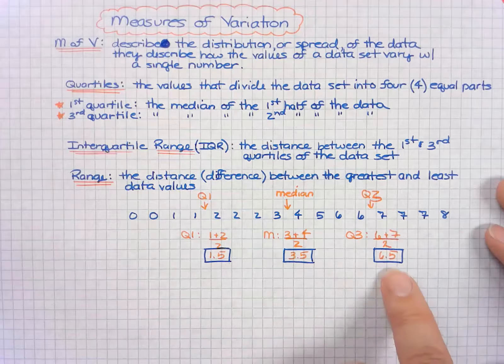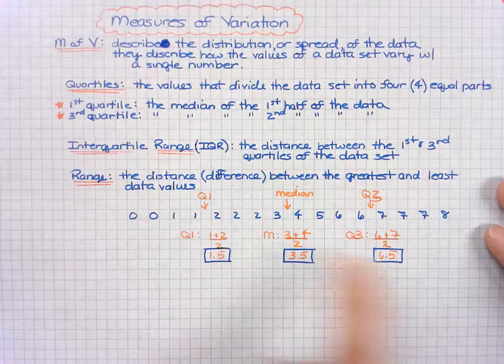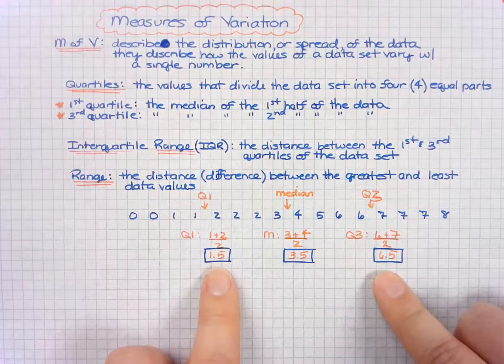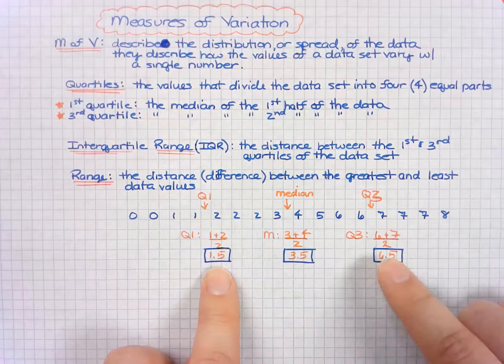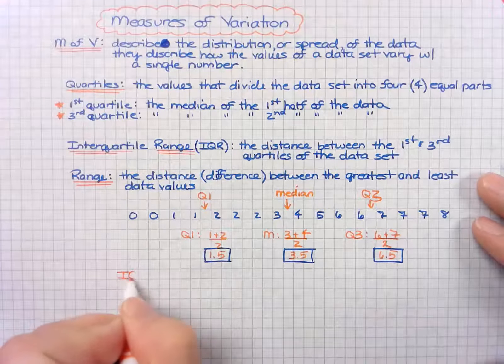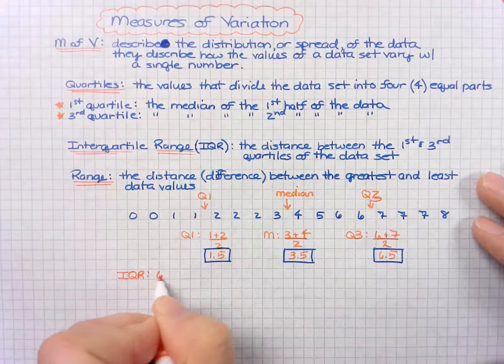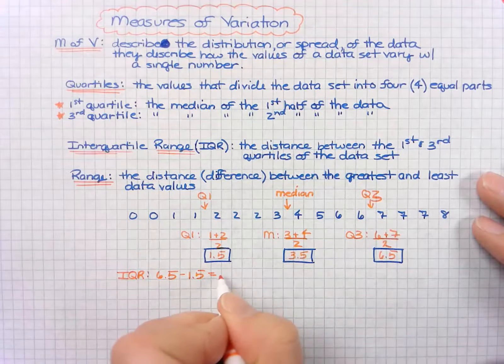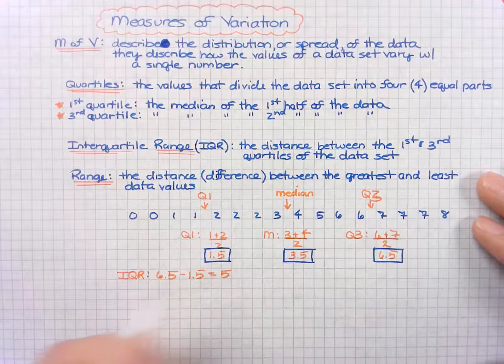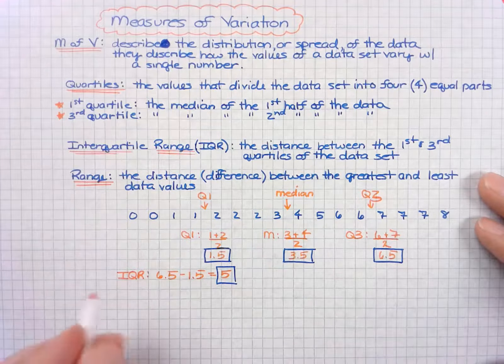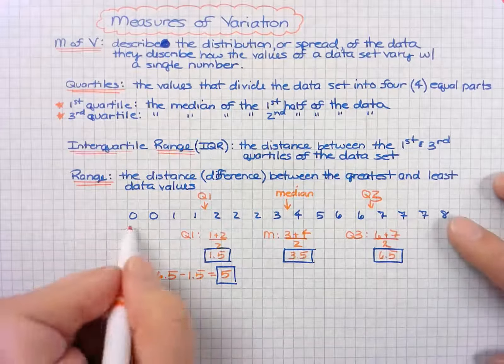The interquartile range is the distance from quartile one to quartile three, which is 6.5 minus 1.5. That gives us 5. And the range is the distance, the total distance from the lowest to the highest number, which is 8.